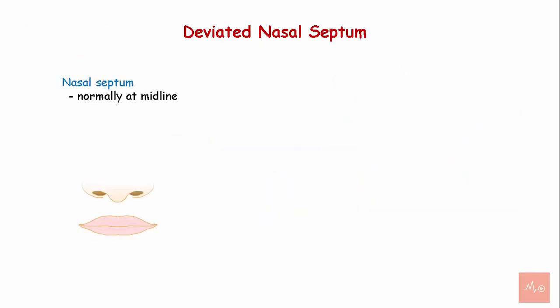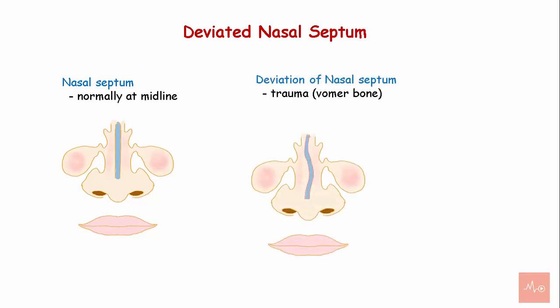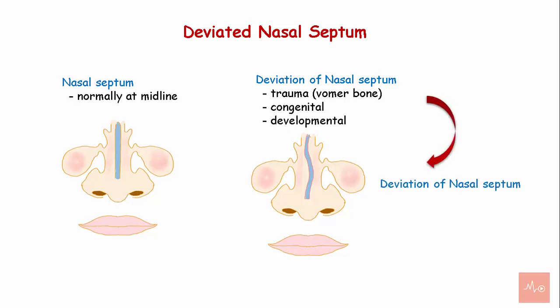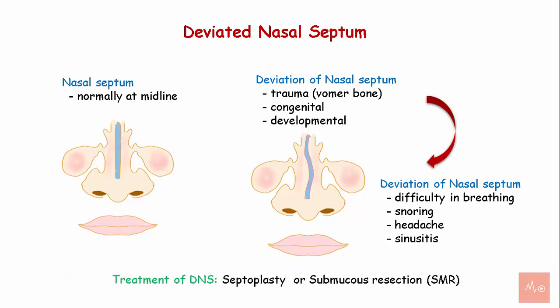Deviated nasal septum. The nasal septum is commonly situated at the midline; however, deviation can occur due to trauma, mainly of the vomer bone, or due to developmental defects. This condition can cause mechanical obstruction leading to difficulty in breathing, snoring, headache, and even sinusitis. A deviated nasal septum can be corrected by septoplasty or submucous resection.